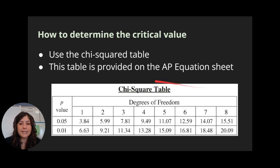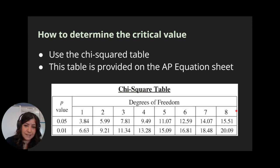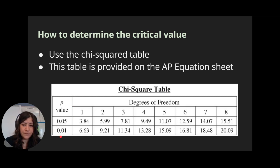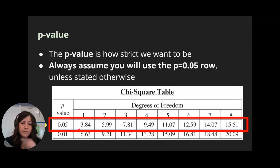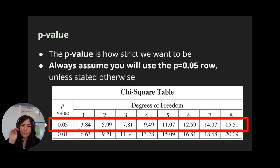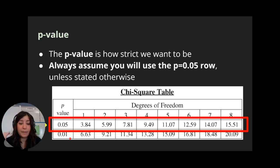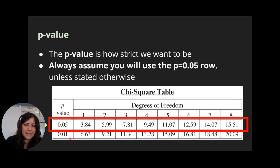To find the critical value, you're going to use this chi-squared table, which is given to you on the AP exam as part of the AP equation sheet. There are two pieces of information we need: the p-value and the degrees of freedom, and then the numbers inside the table are the critical values. The p-value is essentially how strict you want to be — how close do we need those arrows to be to say it's good enough. In general in science, we use the threshold of p equals 0.05, so always assume p equals 0.05 unless the problem explicitly says to use 0.01.